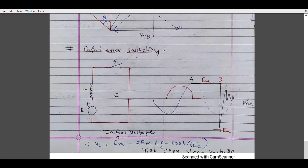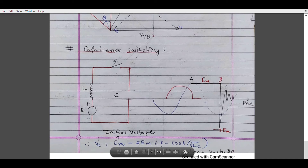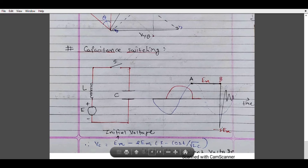As the capacitor is isolated from the source it retains its charge. Now at instant b — half a cycle later — the voltage across the switch reaches a peak value of 2Em, and this voltage reignites the arc, causing an oscillatory transient. The voltage across the capacitor is given by: Vc = Em + 2Em(1 - cos(t / √LC)). This can increase the maximum value of the voltage to minus 3Em, as shown in the figure. The peak value is 3Em in the negative direction.